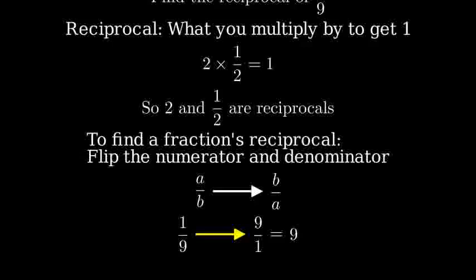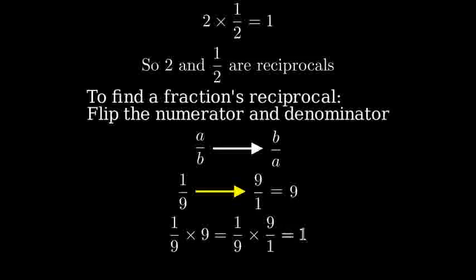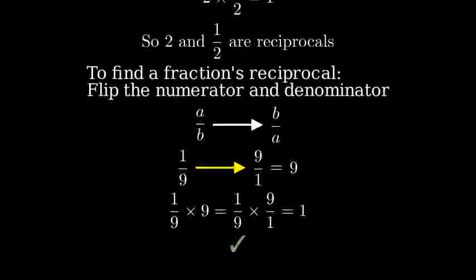Let's verify this is correct by multiplying our original fraction by its reciprocal. One-ninth times nine equals one, confirming that nine is indeed the reciprocal of one-ninth.